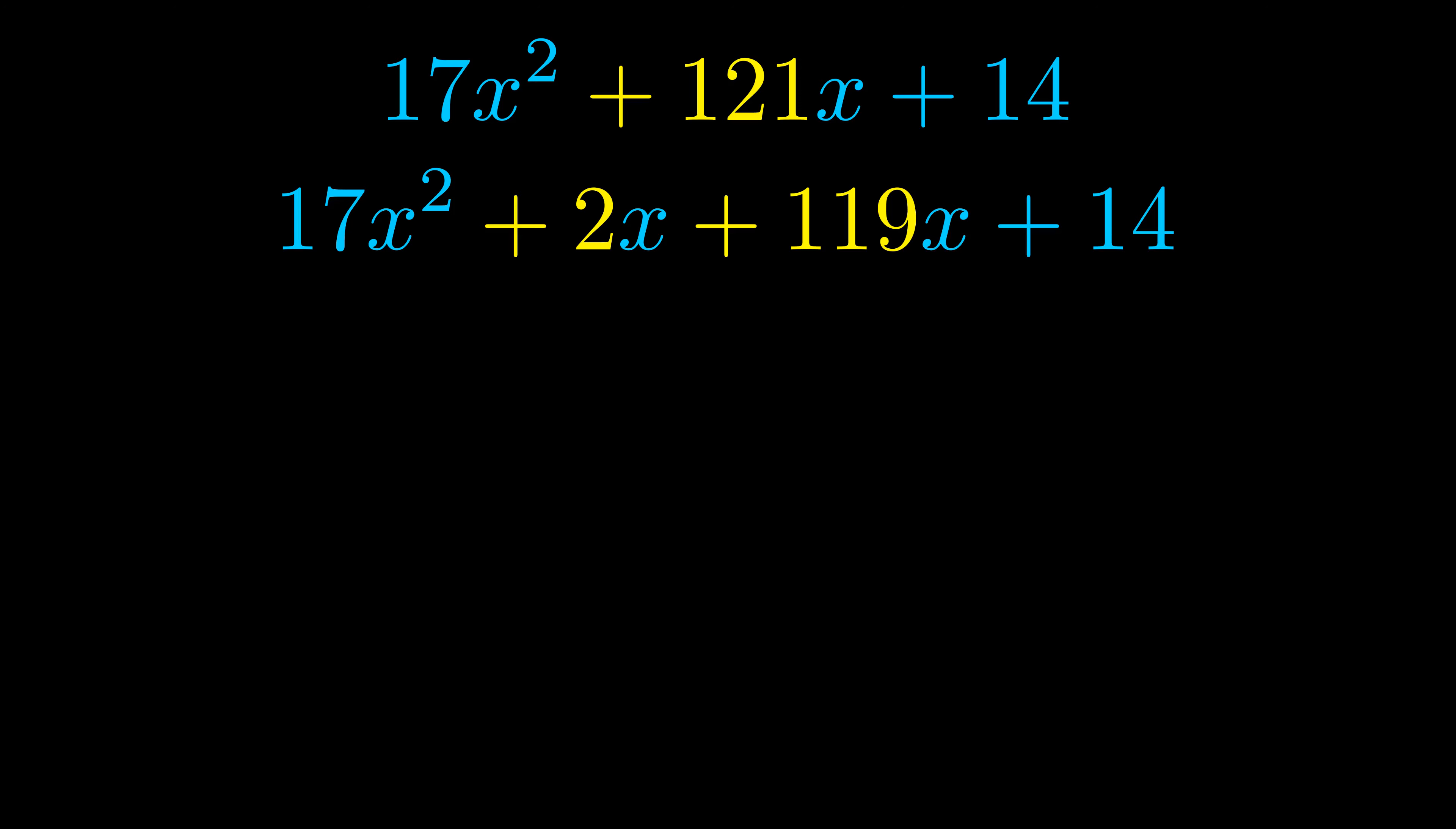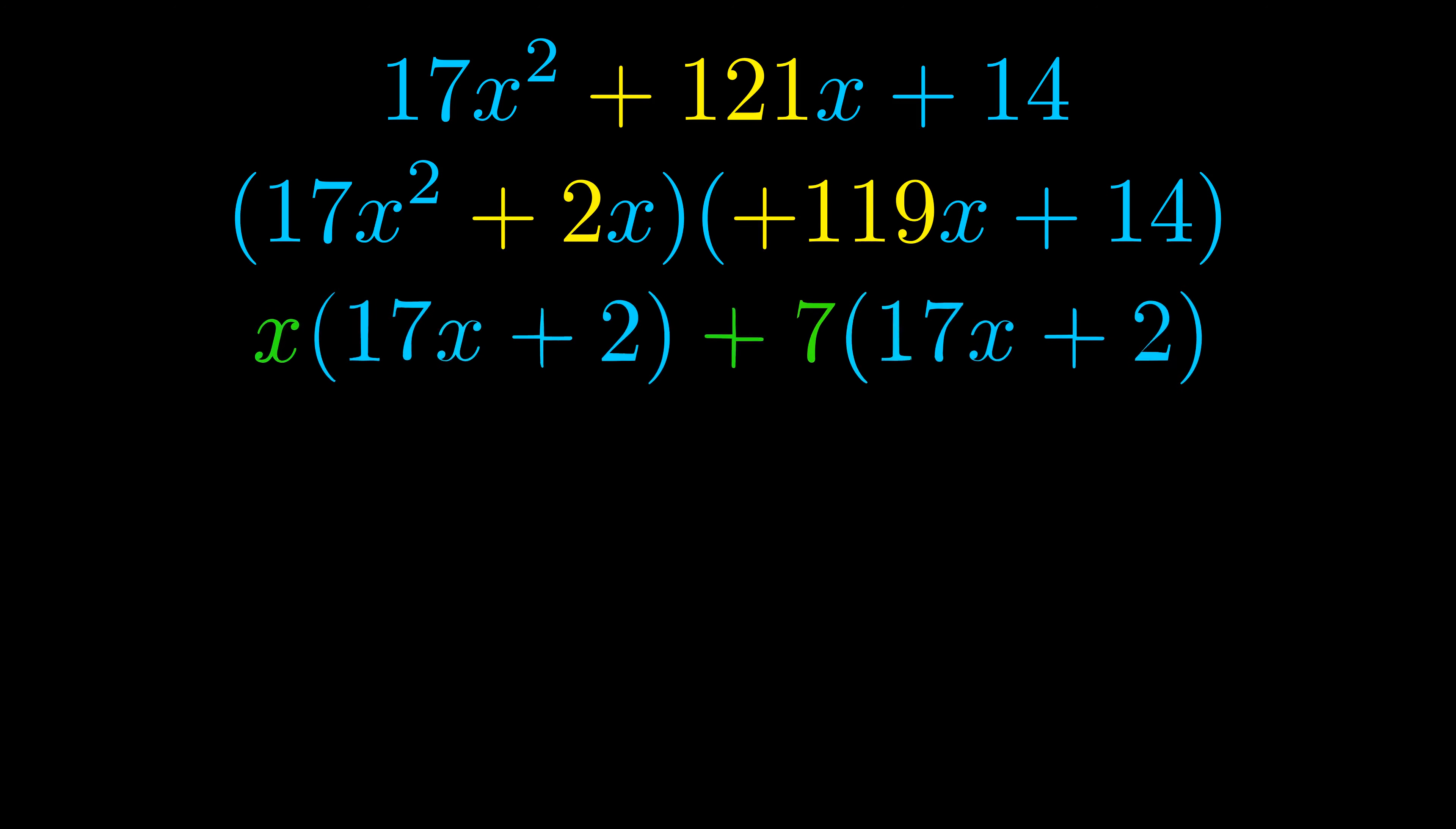Once we've done this we go ahead and we put parentheses around the first term and the last term and we do that so that we can take the greatest common factor out of both terms. We can see the greatest common factor is now outside in green.